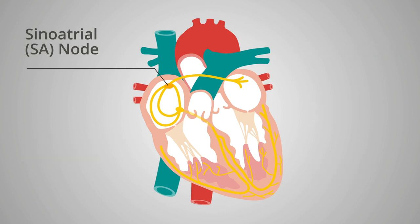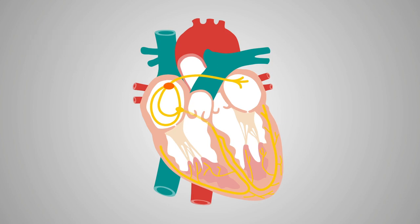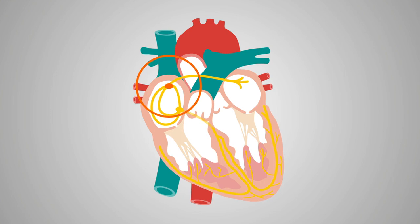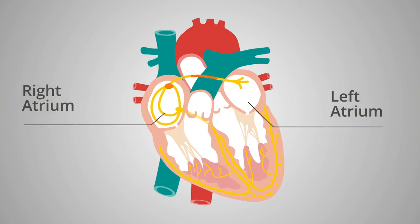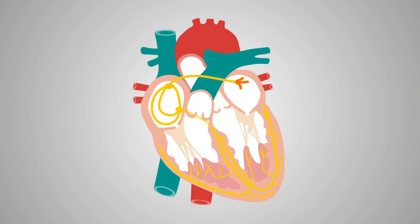The sinoatrial node or SA node, located in the upper portion of the right atrium, acts as the natural pacemaker and starts the sequence by initiating an electrical impulse. This depolarizes the right and left atrial cells simultaneously, resulting in atrial contraction.